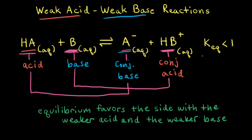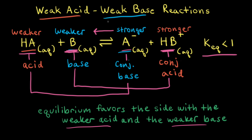When the equilibrium constant is less than one, that means at equilibrium there are more reactants than products. Therefore, the equilibrium favors the formation of the reactants. The equilibrium always favors the side with the weaker acid and the weaker base, so since the equilibrium favors the reactants, the weaker acid and the weaker base are on the reactant side, and the stronger acid and the stronger base are on the product side.